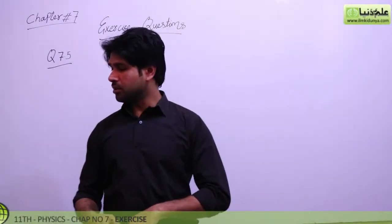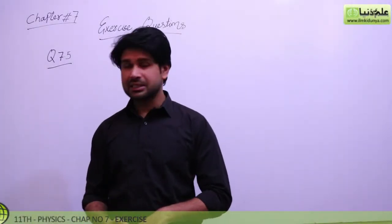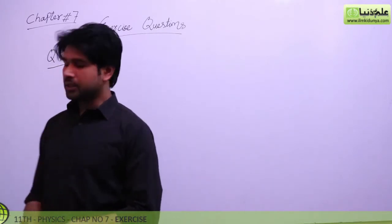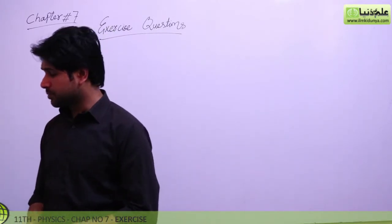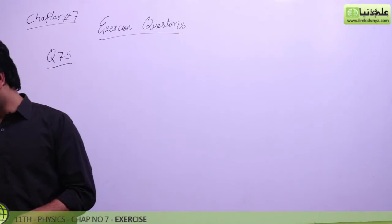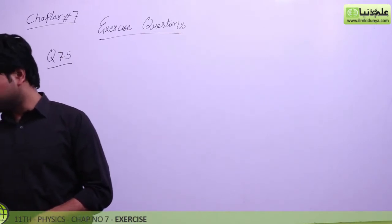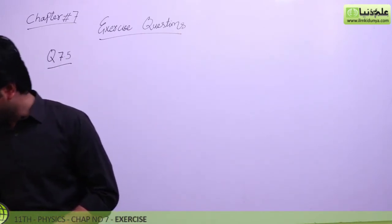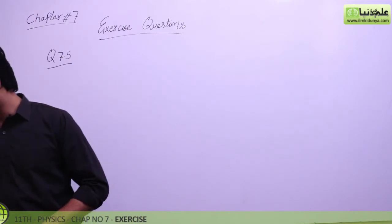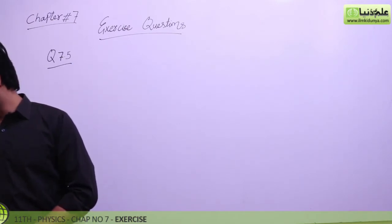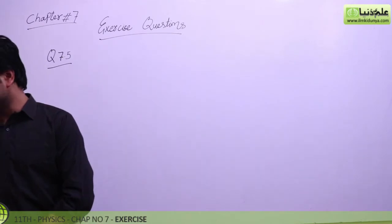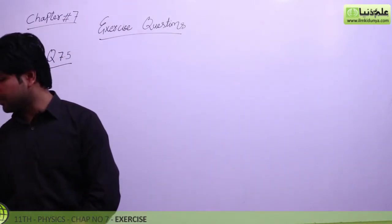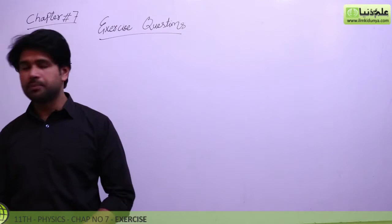Okay students, now we are going to answer our next exercise question of chapter number 7. The next question is 7.5. The statement of this question at your textbook is: what happens to the period of a simple pendulum if its length is doubled? What happens if the suspended mass is doubled?